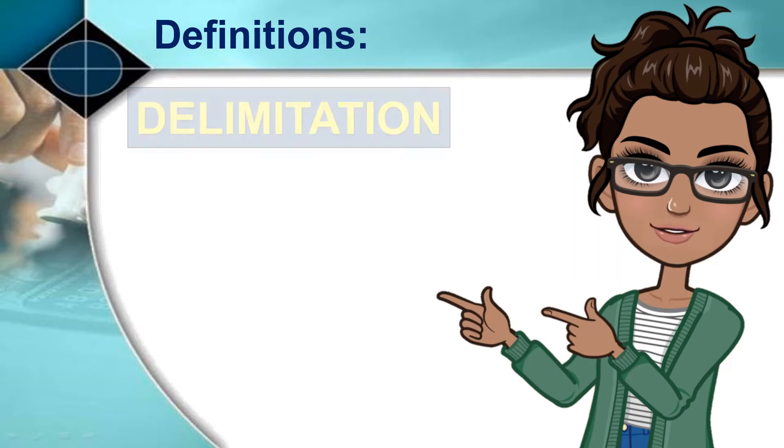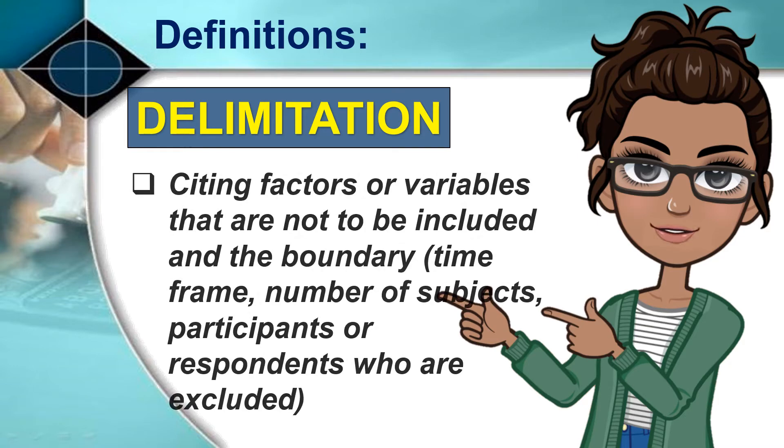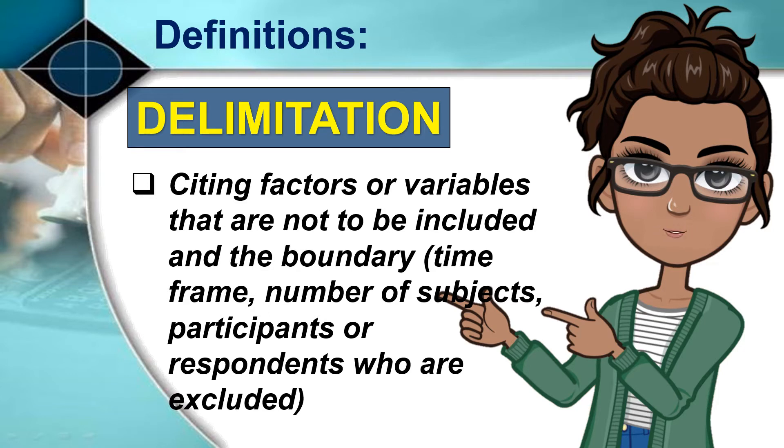Delimitation, on the other hand, is citing factors or variables that are not to be included in the boundary in terms of timeframe, number of subjects, participants, or respondents who are excluded. Specify that which you will not deal with in the study.